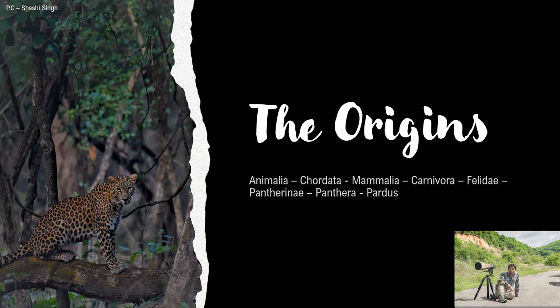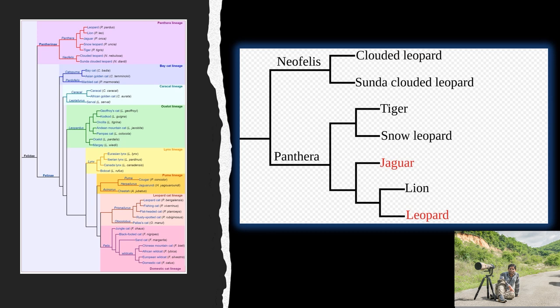The chain goes like this: Kingdom Animalia has sub-structures from Phylum Chordata to Family Felidae. The sub-family Pantherinae has two branches — one is Neofelis, containing clouded leopard and Sunda clouded leopard. The other branch has the biggies like tiger, snow leopard, jaguar, lion and finally the leopard. The scientific name of leopard is Panthera pardus. Forgive my pronunciation if it is wrong — I am a Kannada medium student, so the influence of Kannada on English words is something I cannot avoid. Rather, I am proud.